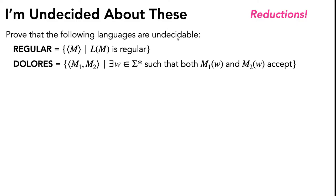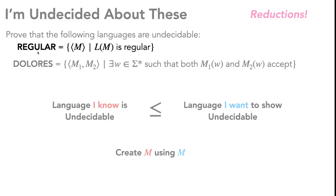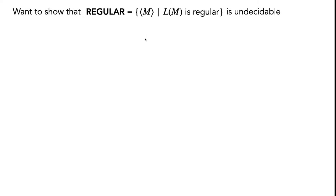In order to show that a language is undecidable, you're going to start off with a language you already know to be undecidable, and show that this language reduces to the language you want to show is undecidable. In other words, you're going to create a decider Turing machine for the language you know is undecidable, using a decider Turing machine for the language you want to show is undecidable. With this strategy in mind, let's show that the language REGULAR is undecidable.